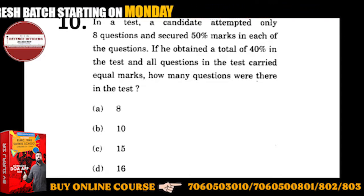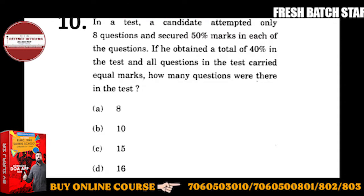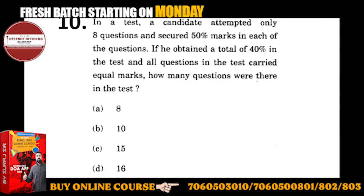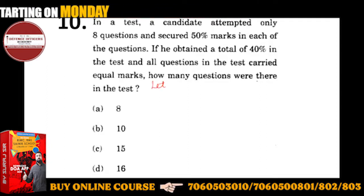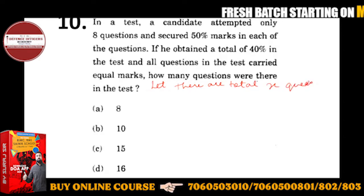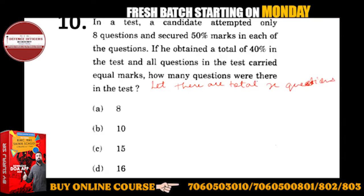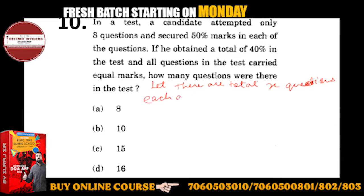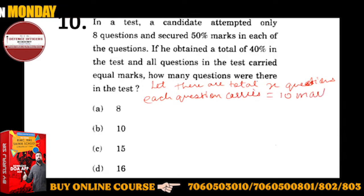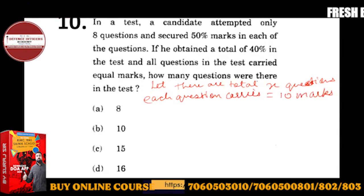Suppose there are total x questions. A candidate attempted 8 questions and secured 50% marks in each question. Let there be total x questions, and each question carries suppose 10 marks. You can relate to any number — if there are 2 questions and every question is 10 marks, so 2 into 10 is 20 marks total.